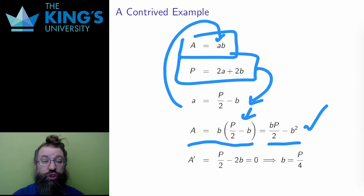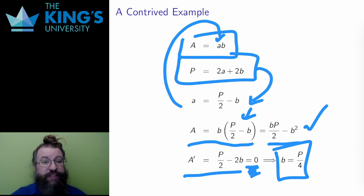So I differentiate to get P over 2 minus 2b, and then I set this equal to zero and solve, and I get b equals P over 4. And here the algorithm would continue with intervals and testing them to determine if this is a minimum or a maximum.